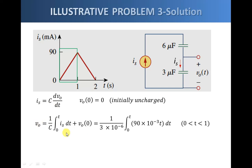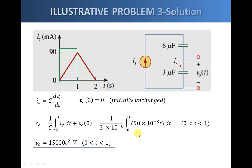We use the formula for voltage — the accumulated charge plus whatever initial voltage is on the capacitor. First we identify the function i_s between zero and one second. This is a straight line described by 90 times 10 to the minus 3 times t milliamps. Substituting into the integral and solving, we get the voltage V_o across the three microfarad capacitor between zero and one second.